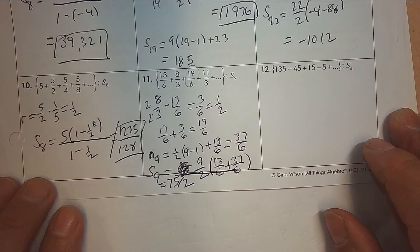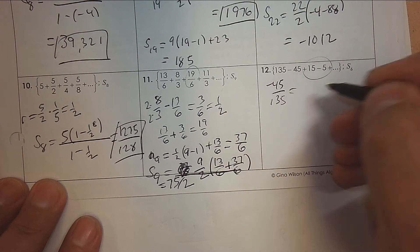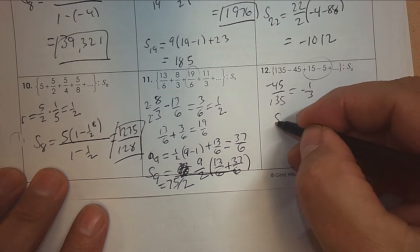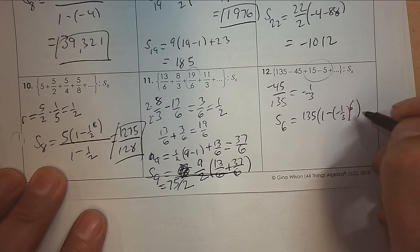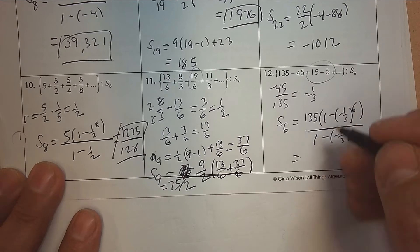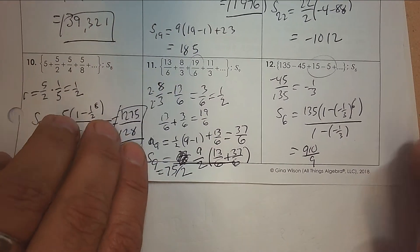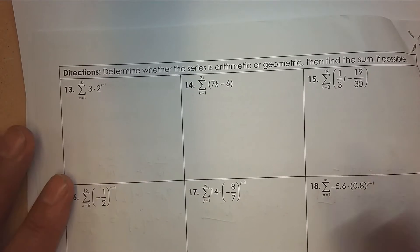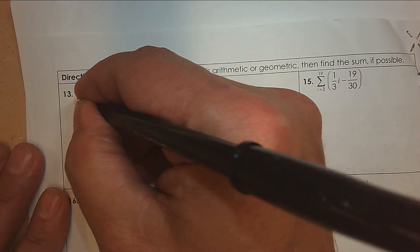Number twelve: it's alternating. Dividing, you get negative one-third as the common ratio. So the sum of the first six terms: the first one is one hundred and thirty-five, times one subtract negative one-third to the exponent six, divided by one subtract negative one-third. For sigma notation — notice that it's exponential, meaning it's geometric. To find the sum of the first ten terms, plug in one and you get three — that's the common ratio base.